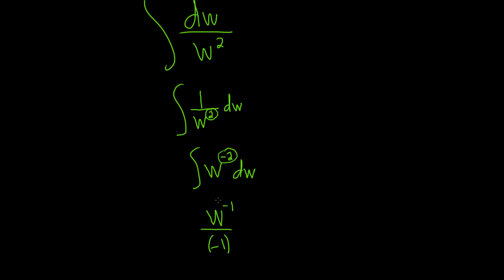Notice that I didn't write the integration symbol, and I didn't write the dw, because we're using the rule. When you use the rule, you drop the integral symbol, you drop the dw. So you just add 1, and then write it as the exponent, and divide by it. And don't forget, plus C.